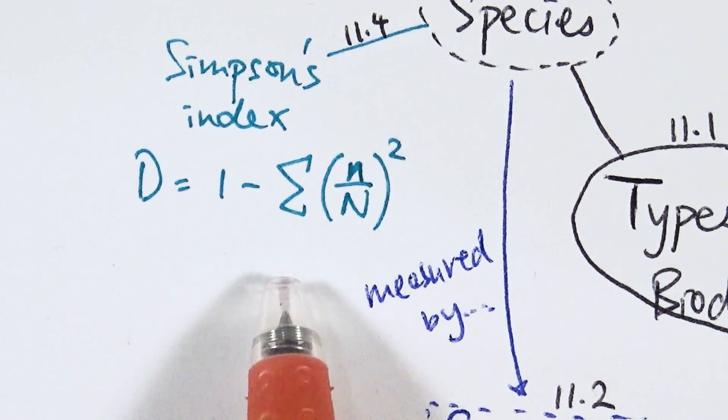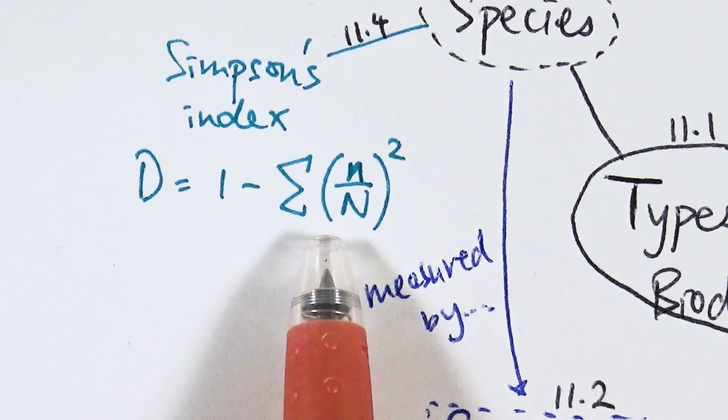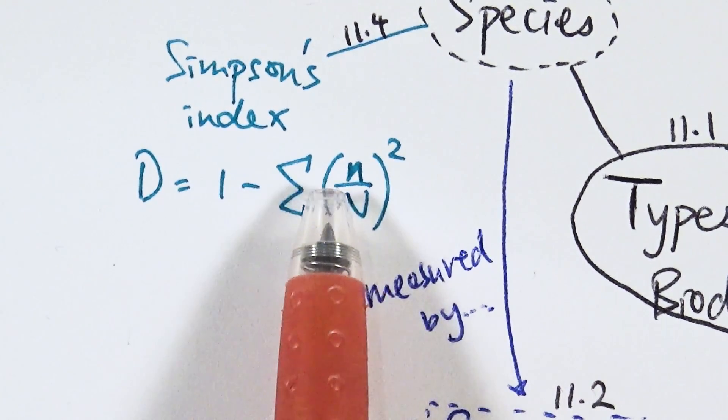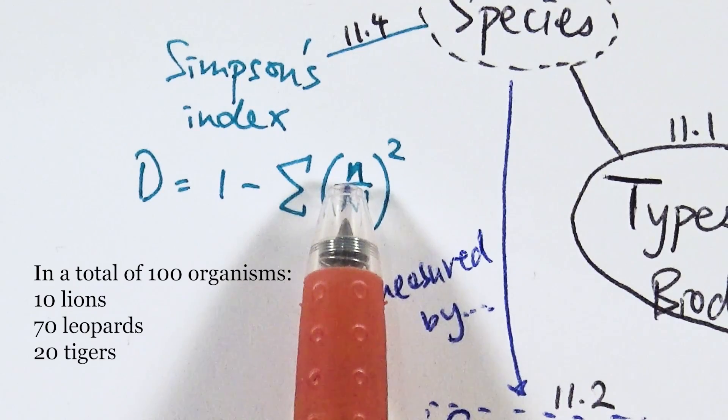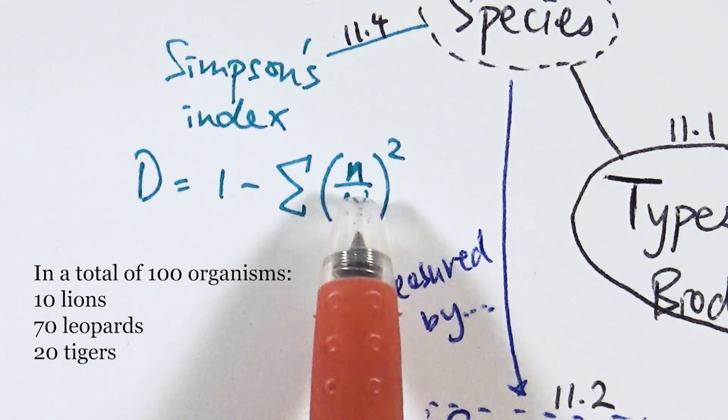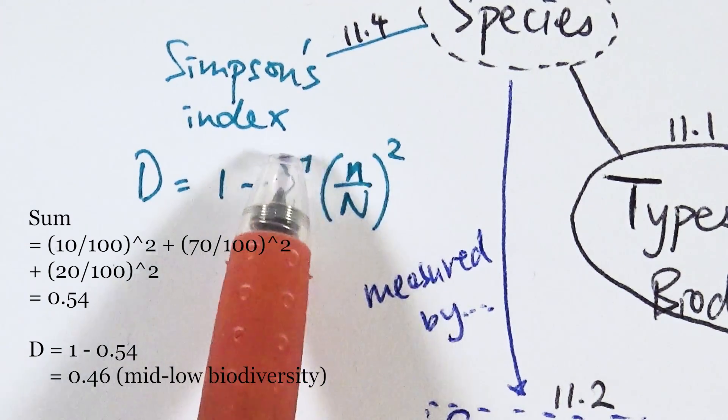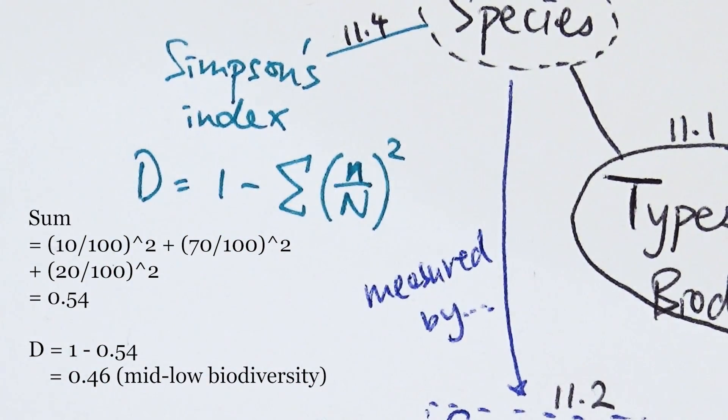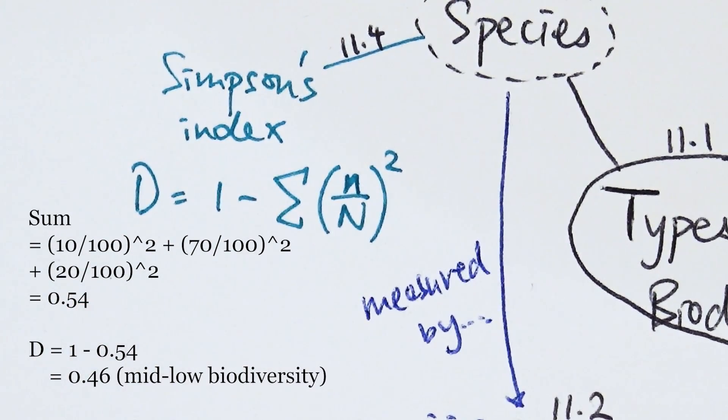In a situation where you have a hundred organisms total, capital N would be a hundred. Within it you might have tigers, lions, and leopards—say 10 lions, 70 leopards, and 20 tigers. You calculate all three numbers using the equation, add them up, then do one minus that to get Simpson's index. Just follow the instructions in the question.